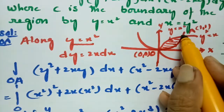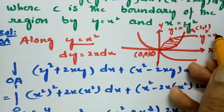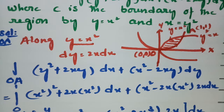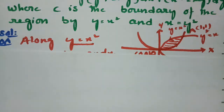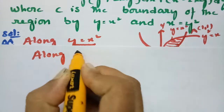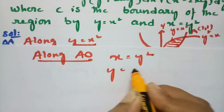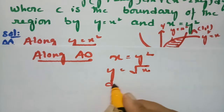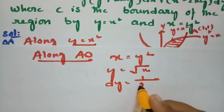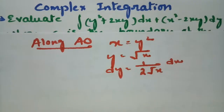Now along AO we use the curve y² = x, i.e., x = y², so y = √x and dy = 1/(2√x) dx. The limits along AO go from 1 to 0 (since we travel from A back to O along this curve).